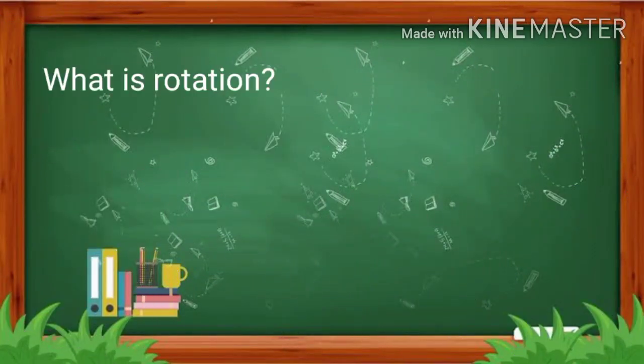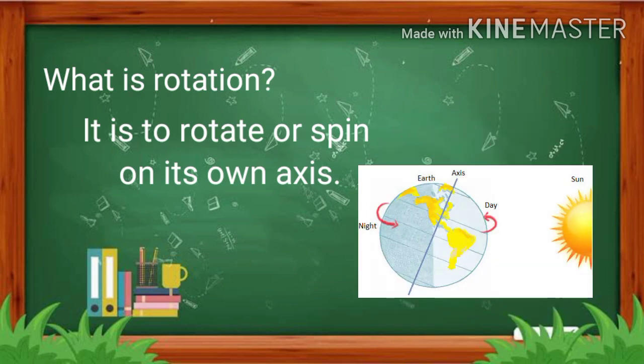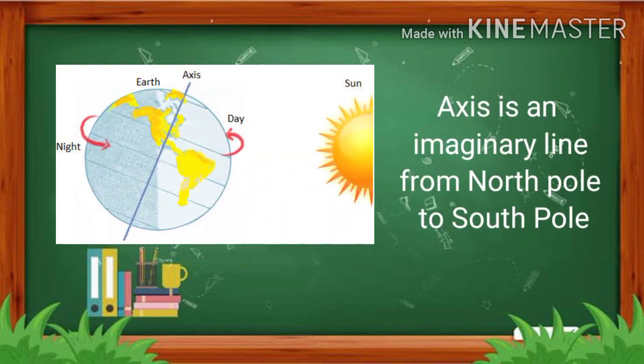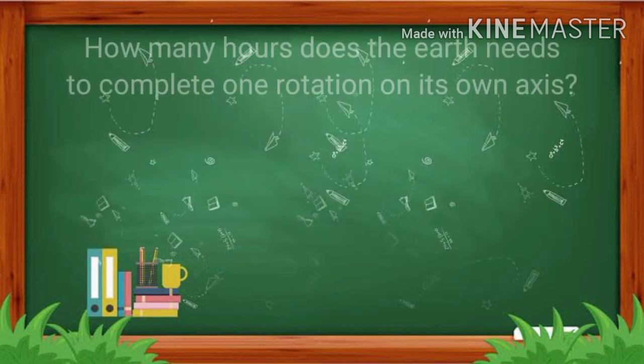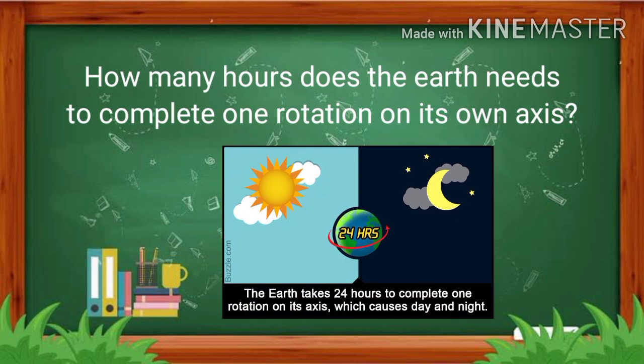So what is rotation? It is to rotate or spin around on its own axis. An axis is an imaginary line from the North Pole to the South Pole. How many hours does the Earth need to complete one rotation on its own axis? It takes 24 hours, equivalent to one day, for the Earth to complete one rotation.